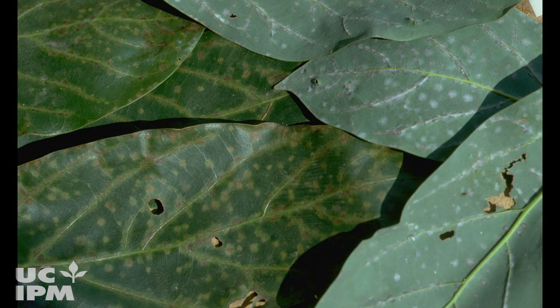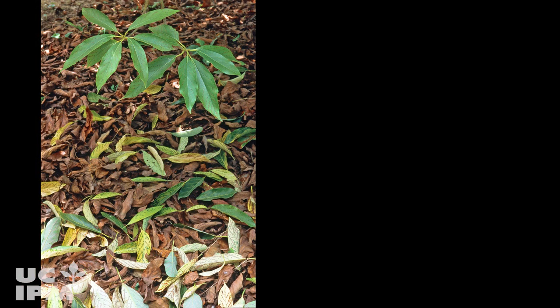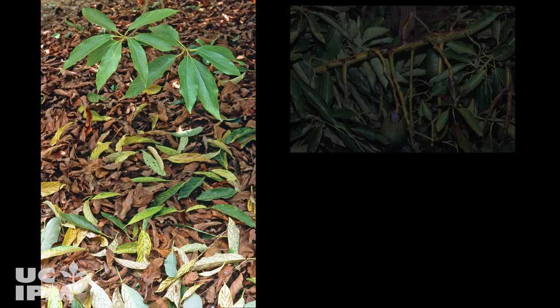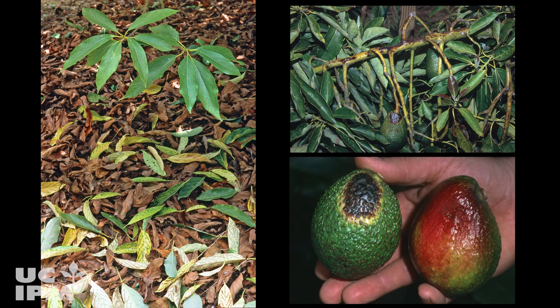Mites damage avocado trees by removing chlorophyll from the leaves during feeding. This eventually defoliates the tree, exposes the bark and fruit to excess sunlight, increases sunburn damage, and reduces yields.